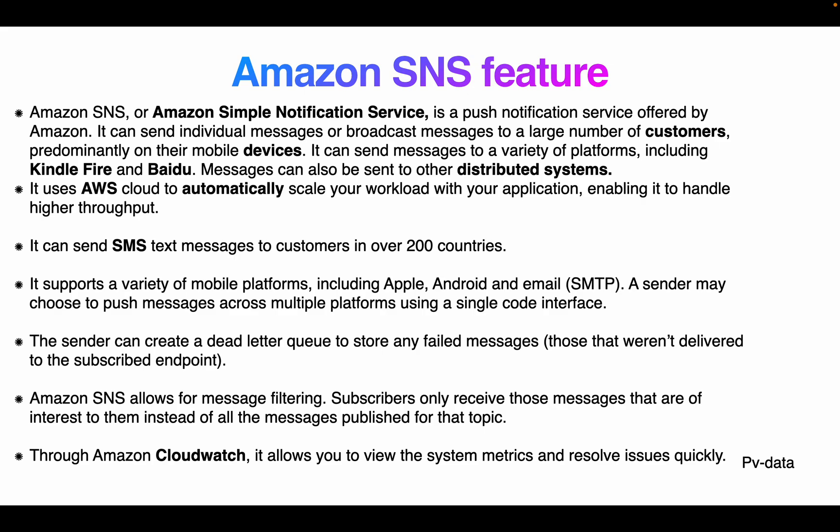Messages can also be sent to distributed systems. It uses AWS cloud to automatically scale your workload. Amazon SNS can send messages to customers in over 200 countries. It supports a variety of mobile platforms including Apple, Android, and email via SMTP protocol. Senders can push messages across multiple platforms using a single code interface, and a dead-letter queue can be created to retry any failed message deliveries.